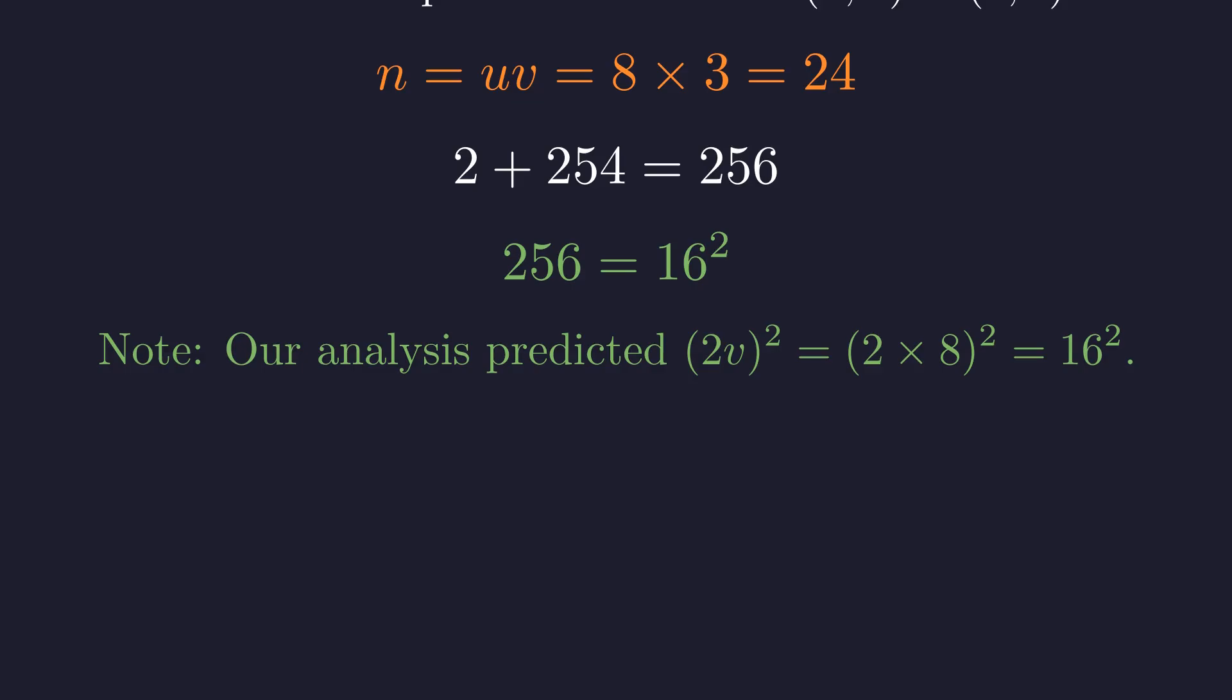Our derivation also predicted this result. The final value should be the square of 2v, which in this case is the square of 2 times 8, or 16². The theory is consistent with the example.